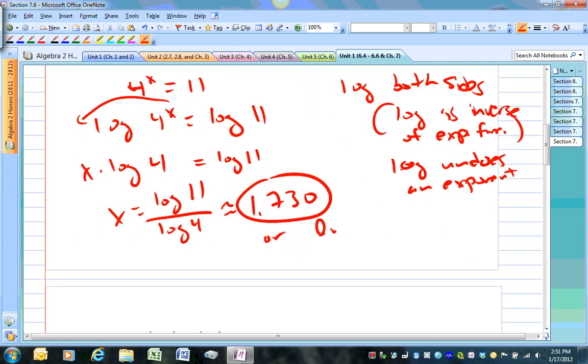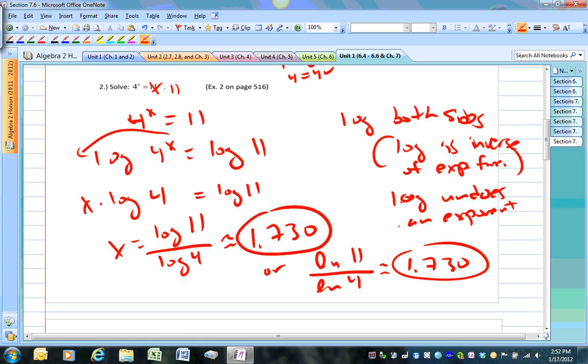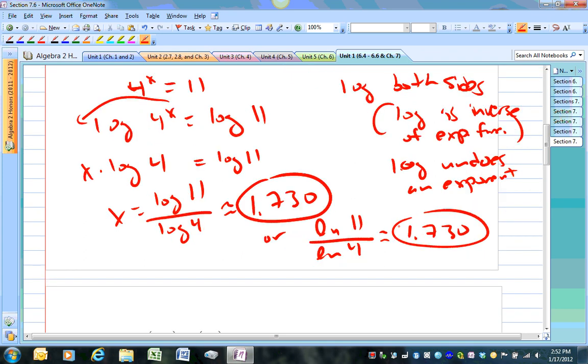You could also do ln, your choice. You still would get the same thing if you punch in your calculator. You wouldn't need a calculator to do this, and I would give you a calculator, or allow you to use one. So just log both sides to isolate the exponent. And using the power rule, you can get x by itself. You also could check it. If you check really fast, 4 raised to the 1.730 power equals 11. Use my calculator, raise 4 to the 1.73 power. We do get something that's pretty close to 11. So that's close enough.